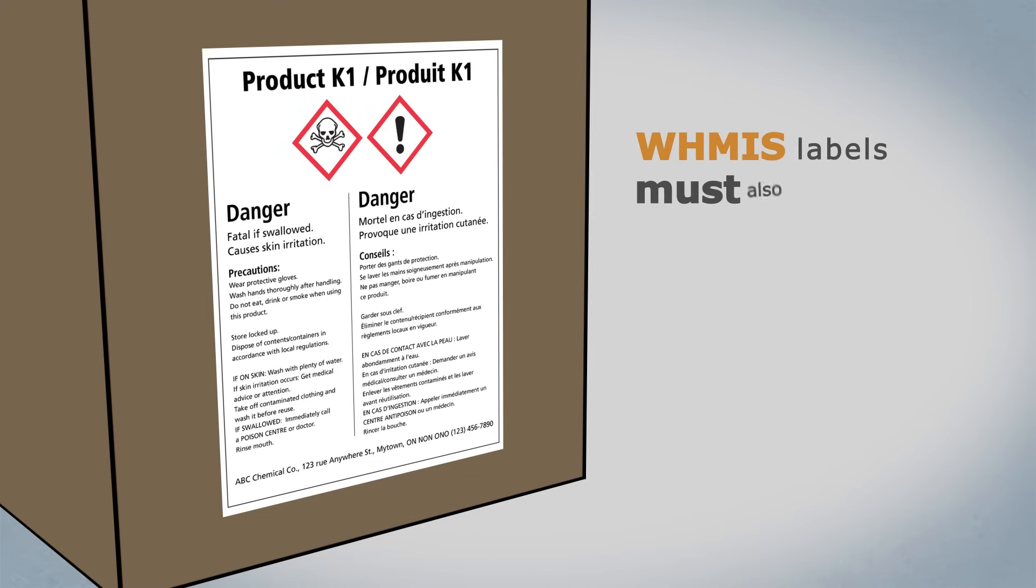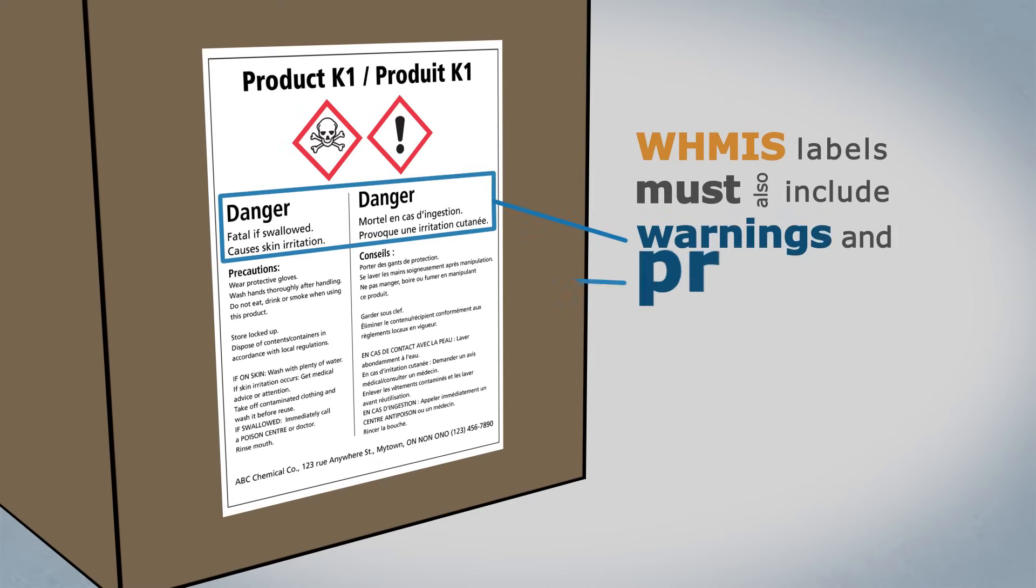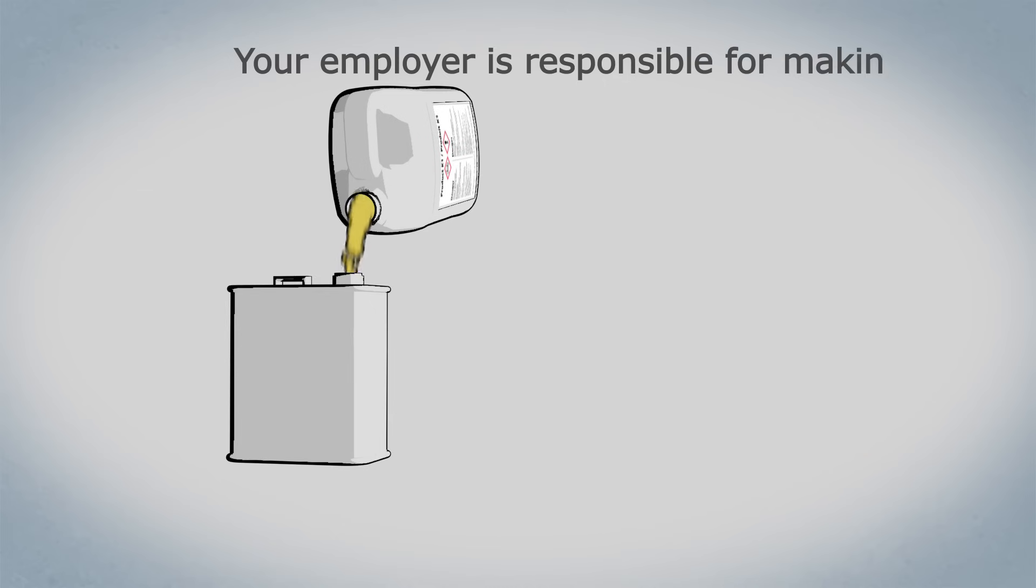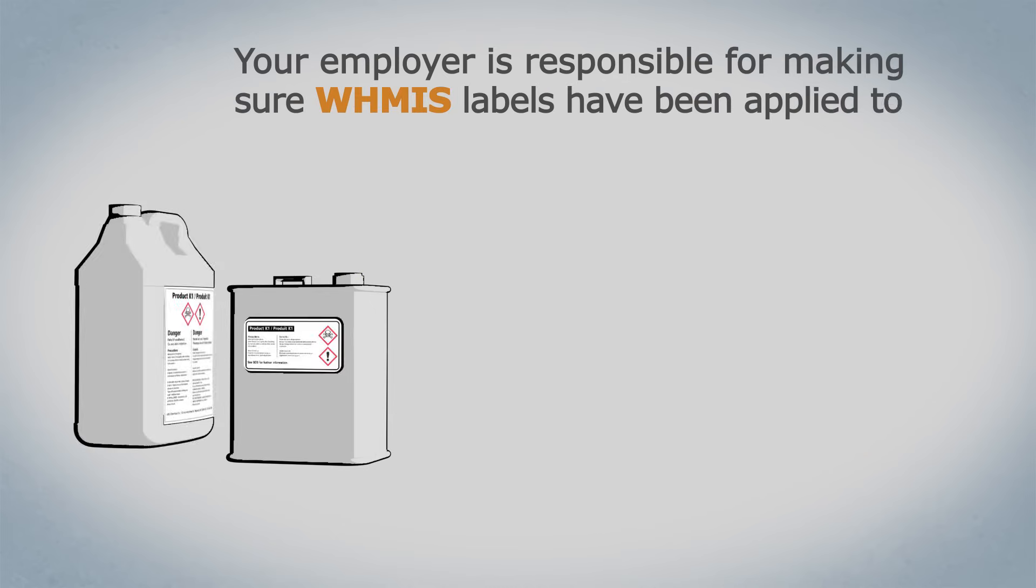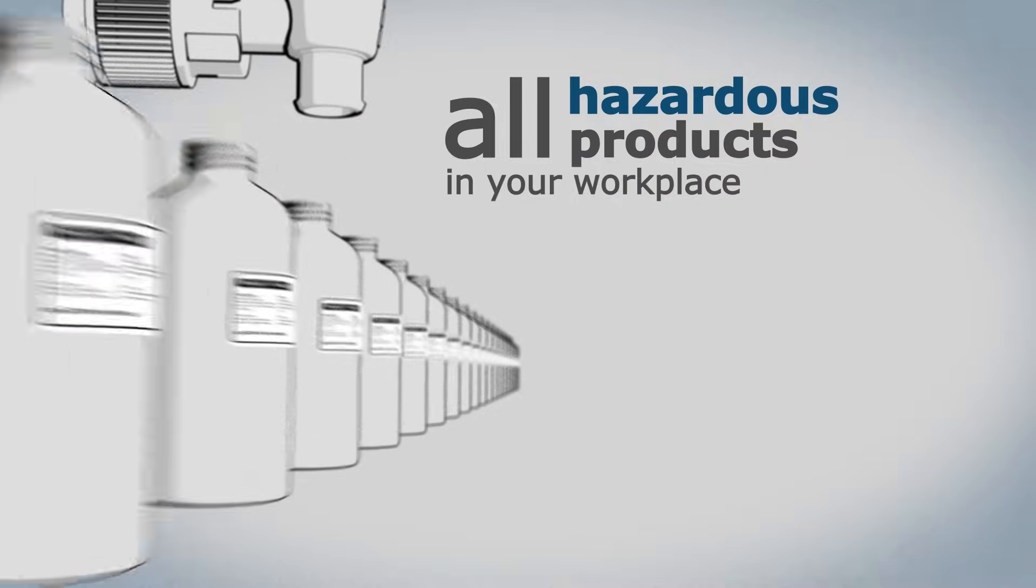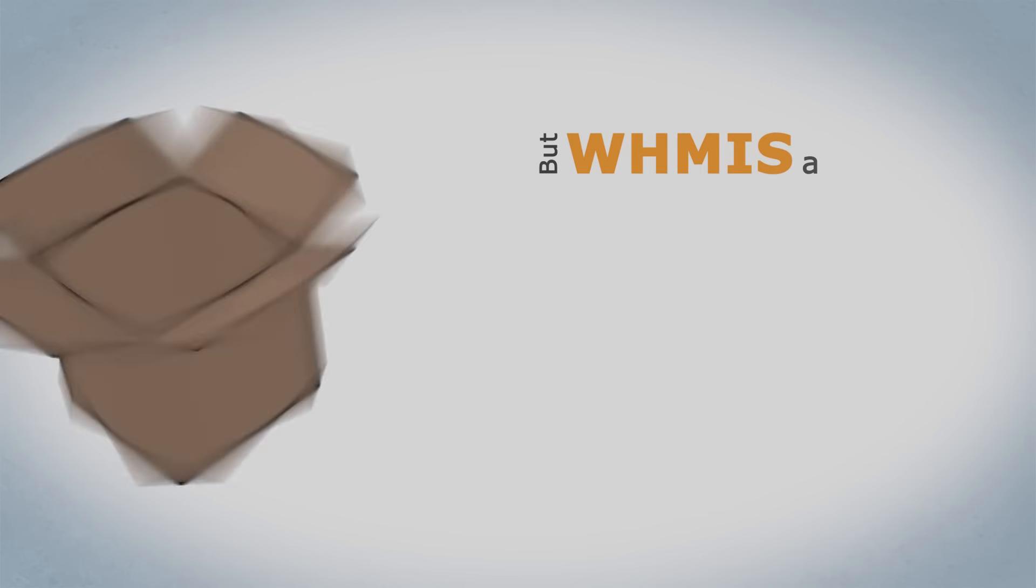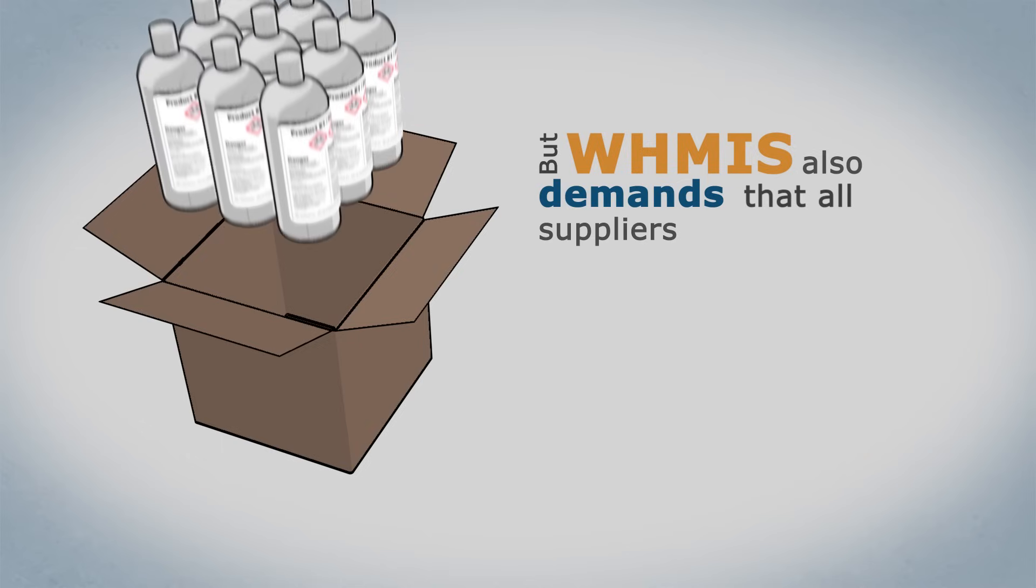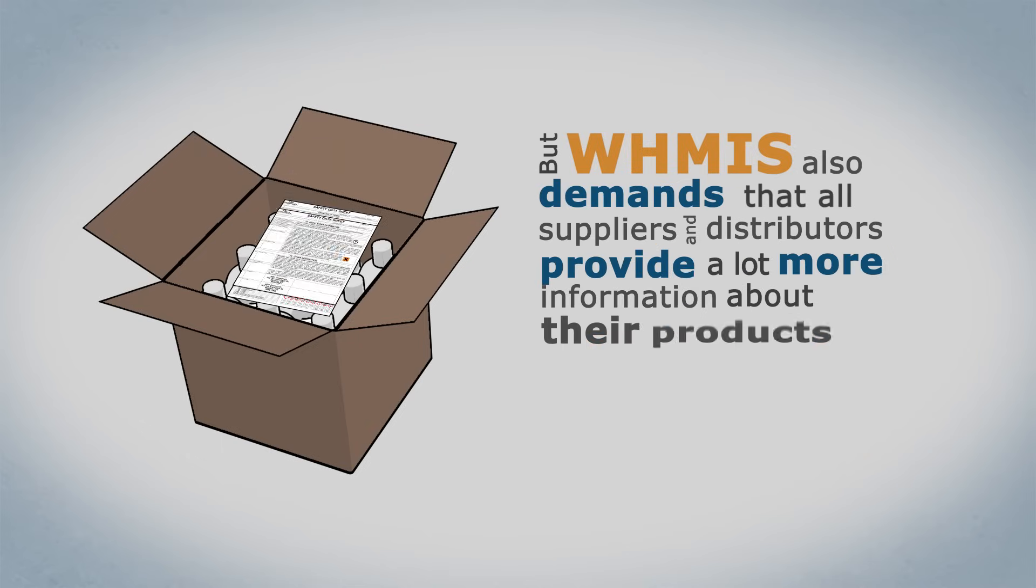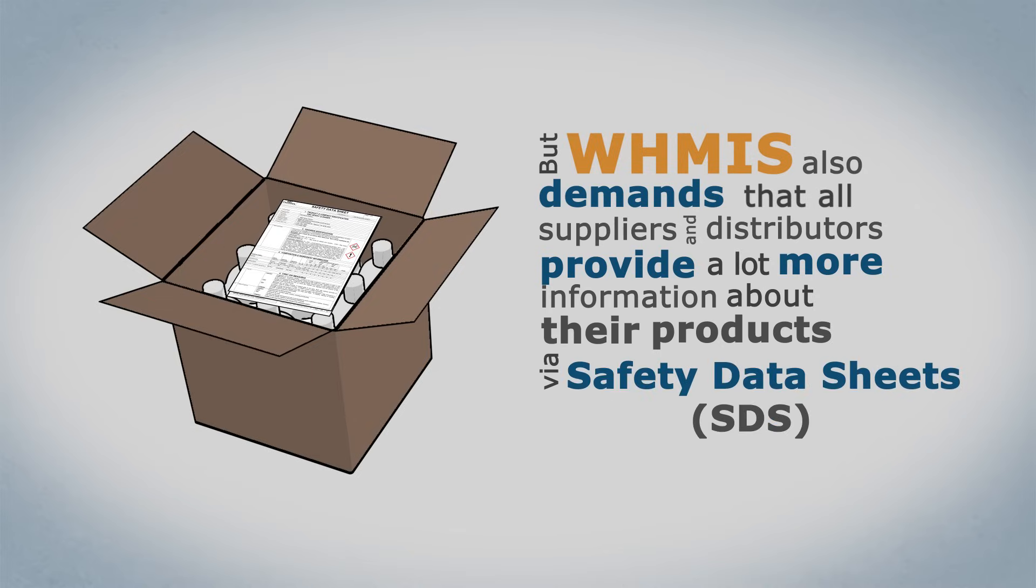WHMIS labels must also include warnings and precautions for safe use. Your employer is responsible for making sure WHMIS labels have been applied to all hazardous products in your workplace. But WHMIS also demands that all suppliers and distributors provide a lot more information about their products via safety data sheets or SDS.